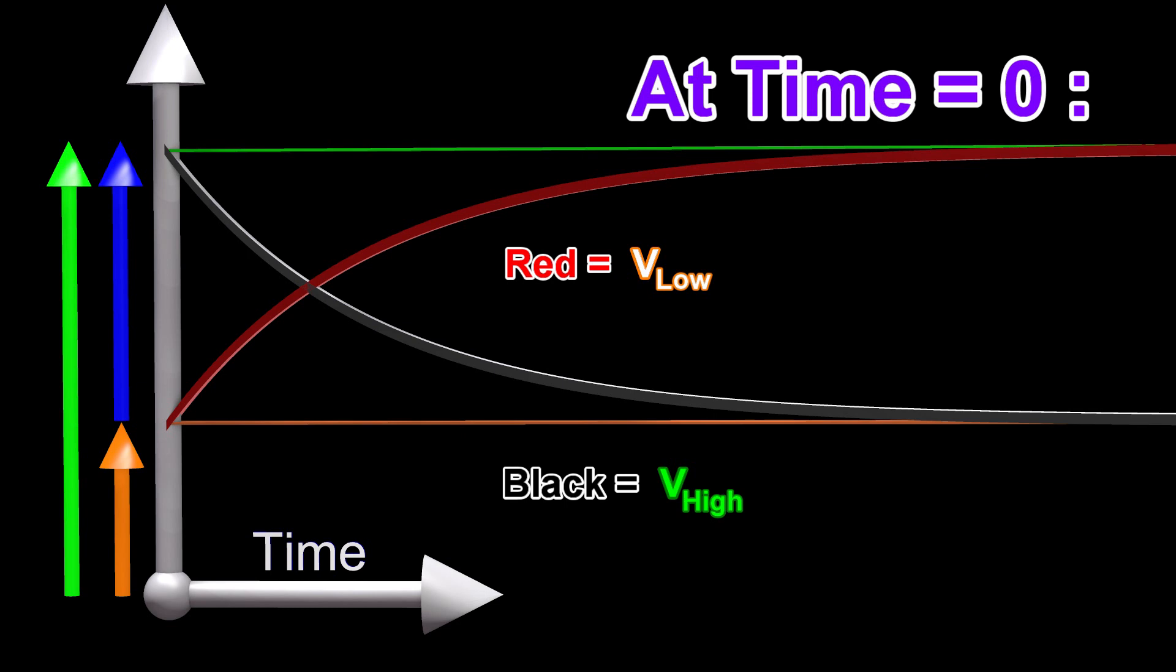Hence, at time zero, the red curve is at the bottom line and the black curve is at the top line, as expected.